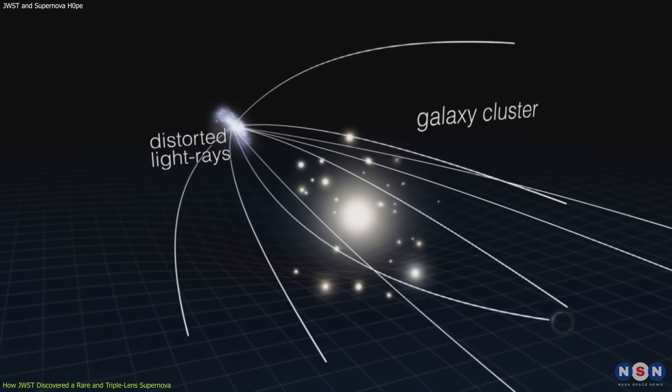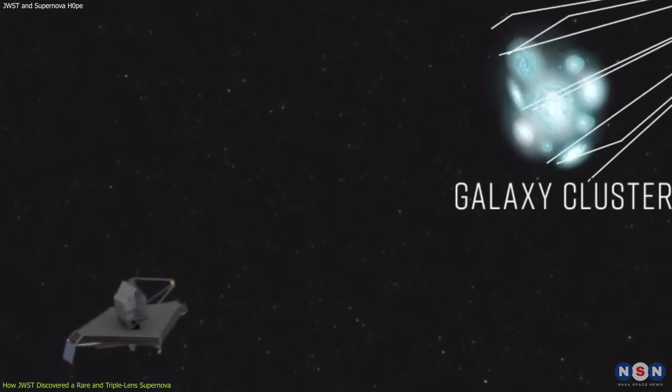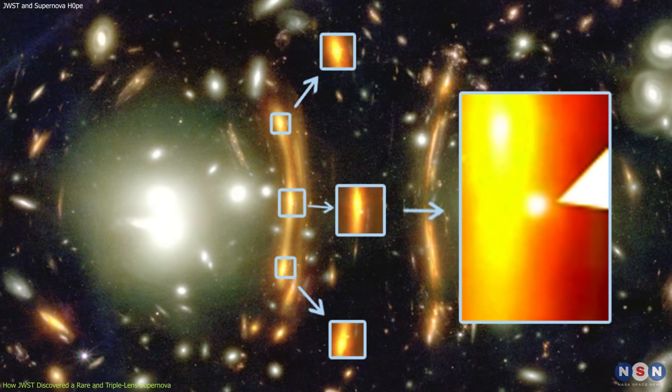As the light from the supernova traveled through this warped spacetime, it followed different paths depending on its angle and distance from the cluster. Some of these paths converged at Webb's position, creating multiple images of the same source.